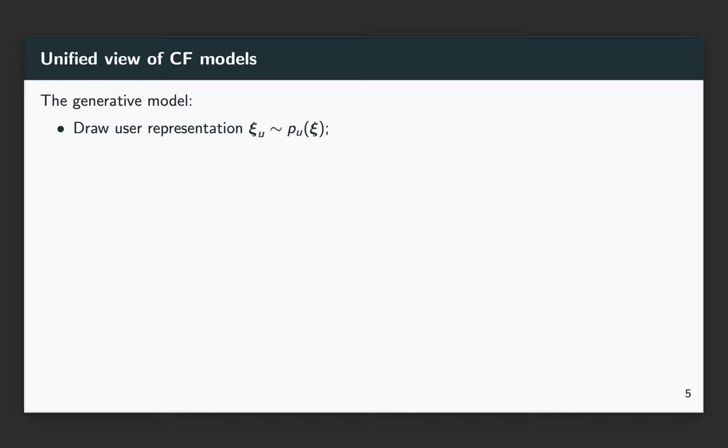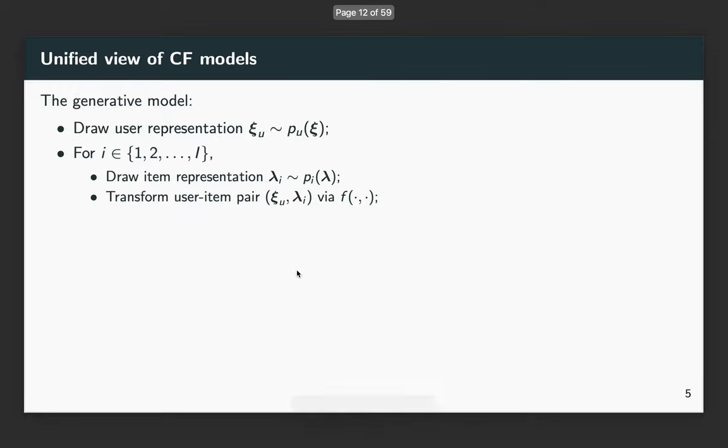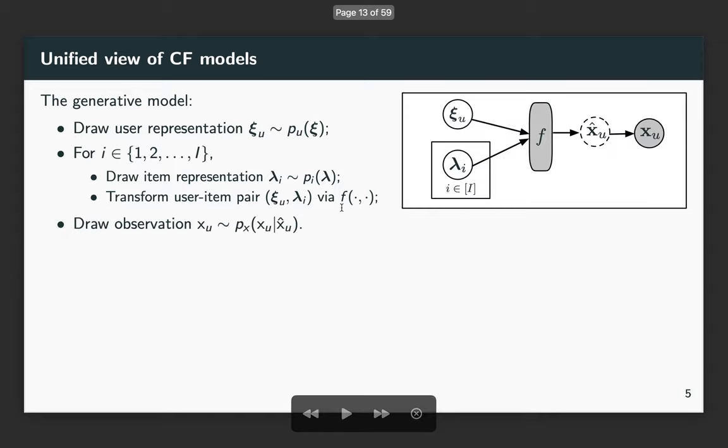Here is our proposed generative model. We first draw a user representation ξ_u. And then for each item, we draw the representation λ_i. Then we transform the user-item pair through a function f to get x_u-hat.